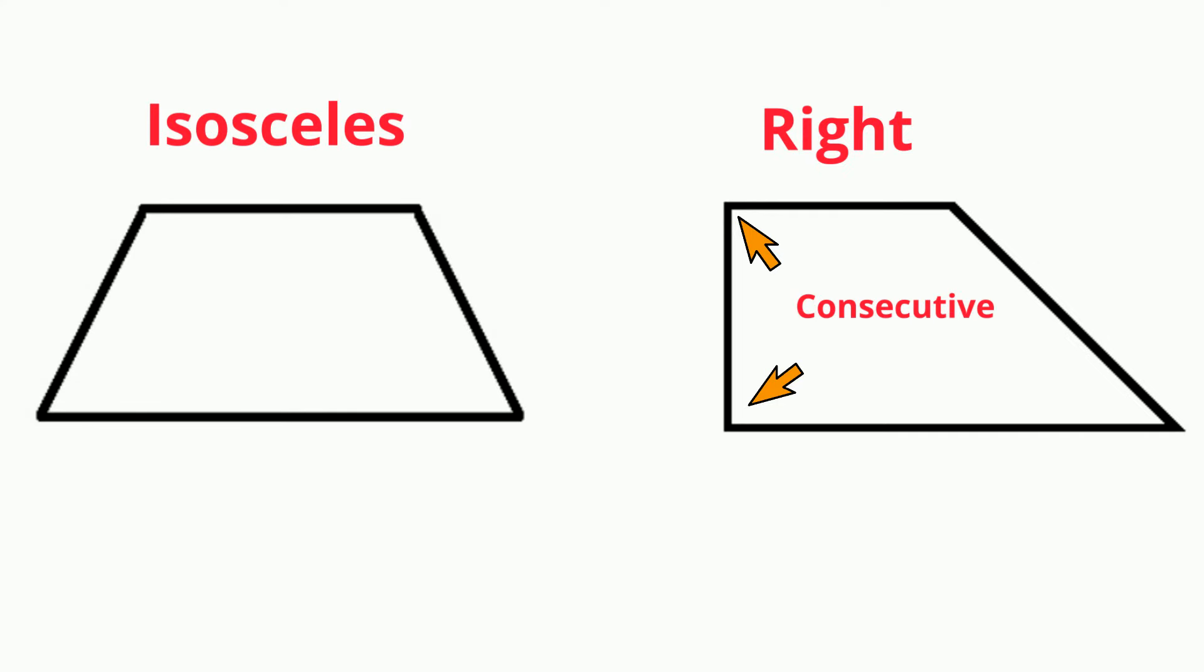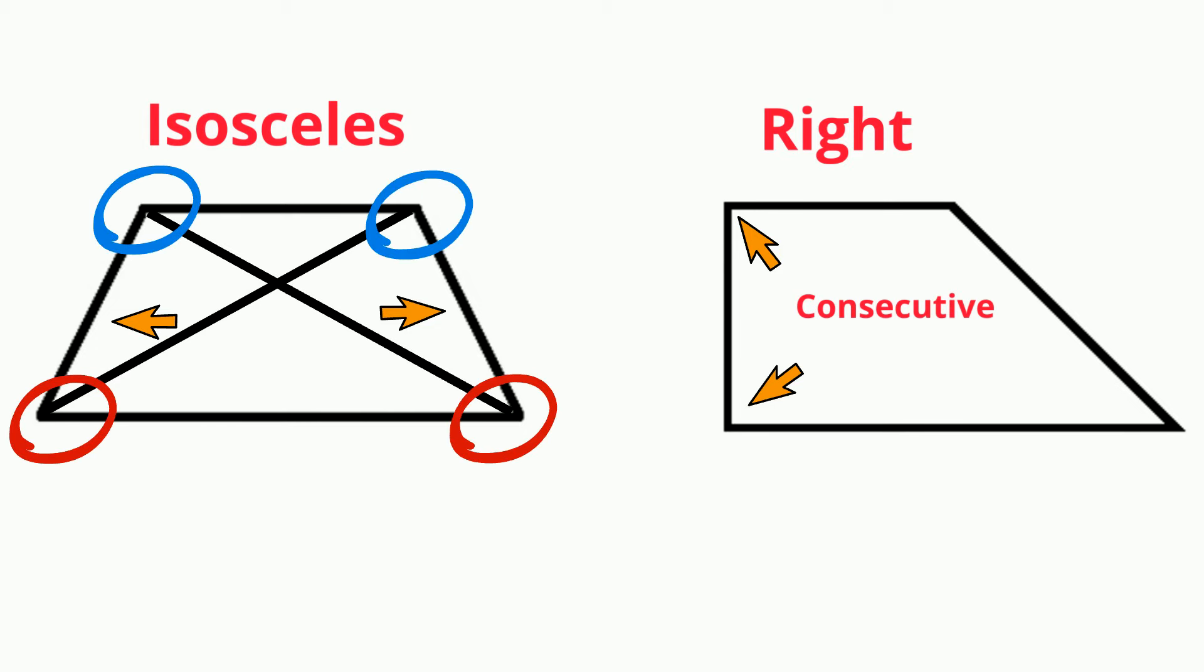An isosceles trapezoid has two equal legs, which results in the diagonals being equal. The base angles are congruent or equal.